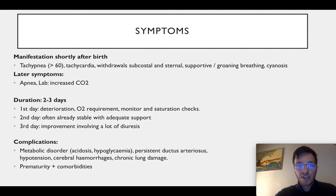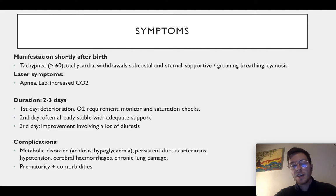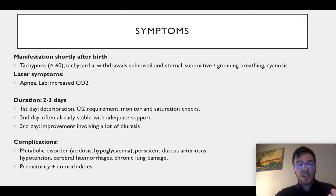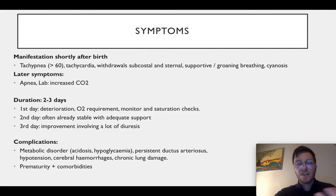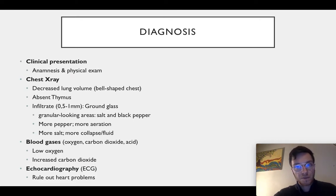There can be some complications though, mainly metabolic disorders from acidosis or hypoglycemia. They can have a persistent ductus arteriosus, hypertension, cerebral hemorrhages, or chronic lung damage. Premature children with comorbidities from that prematurity have more risk of any of these complications, so that's important to know.